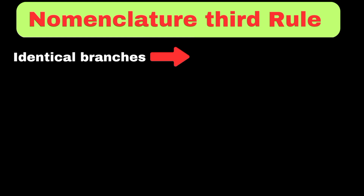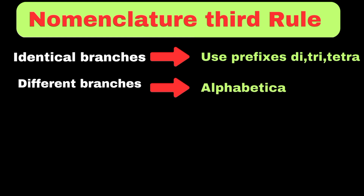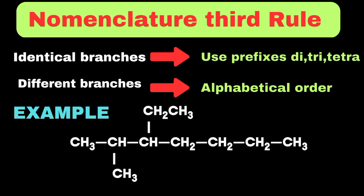The third rule states that if branches are identical, we should use prefixes such as di, tri, tetra, and so on. But if branches present on the parent chain are different, we need to follow alphabetical order. For example, if the parent chain has both methyl and ethyl groups, since ethyl comes alphabetically before methyl, we write ethyl-methyl rather than methyl-ethyl.